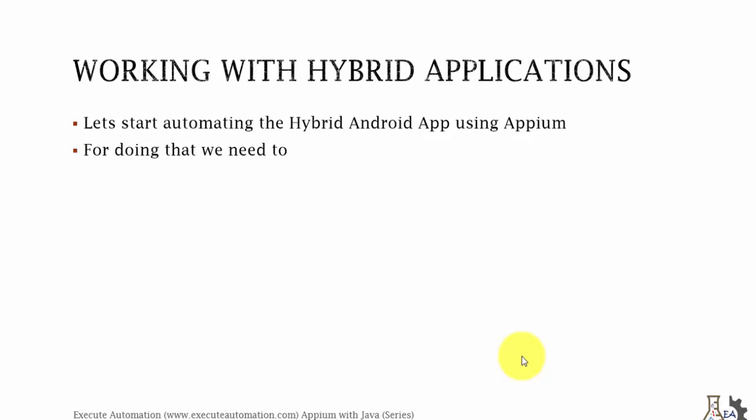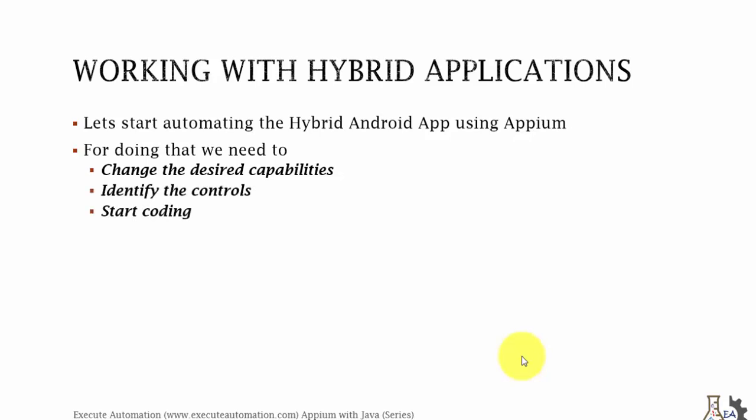Great, so let's start automating the hybrid Android app using Appium. For doing that we need to change the desired capabilities, identify the controls and start writing the code. There is one additional point - with hybrid applications we also need to switch to the context, because hybrid applications are basically a WebView on top of the Android application. You need to switch to the particular context and then perform the operation.